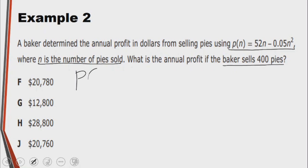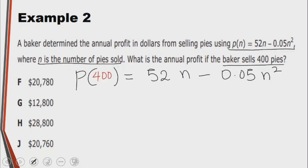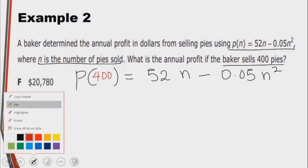We have P(n) equals 52n minus 0.05n squared. In this case, we want to replace the n with 400 because that's what we are given. Whatever we see n, we replace it with 400.